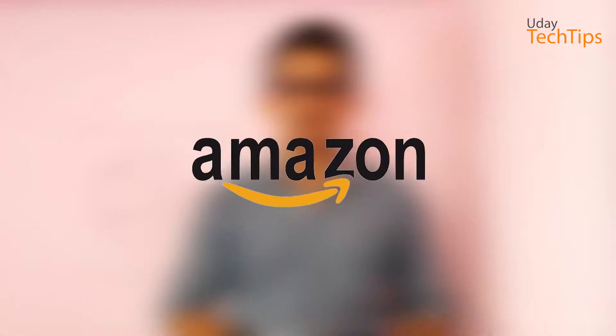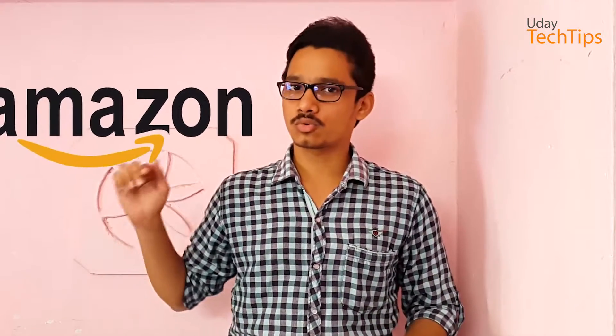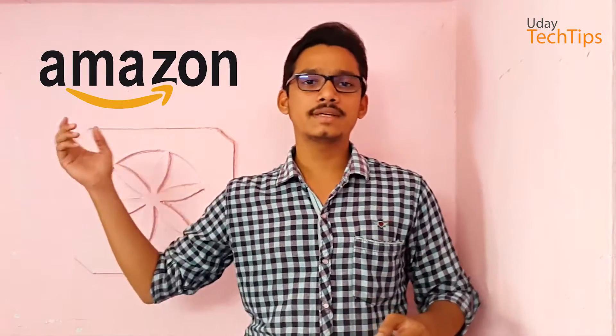In this video, the first company's logo is Amazon. The Amazon logo has a small arrow that looks like a smile. This arrow points from A to Z, meaning this company is friendly and sells everything from A to Z. Amazon is one of the most famous companies in the world.